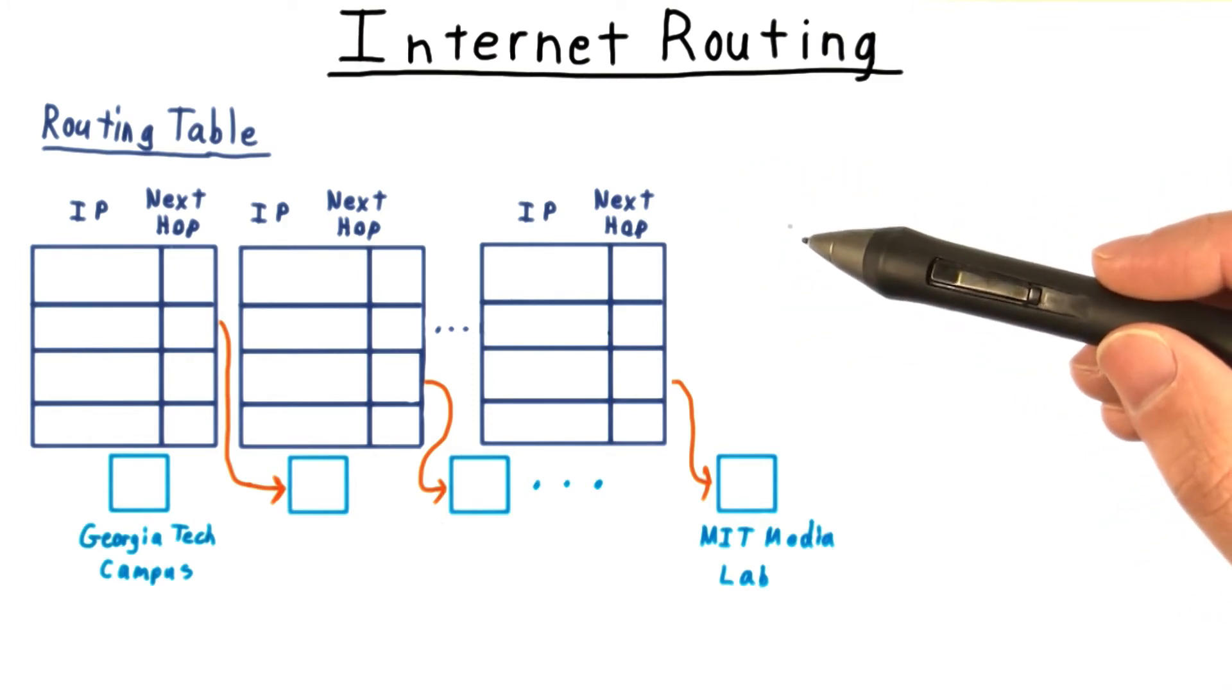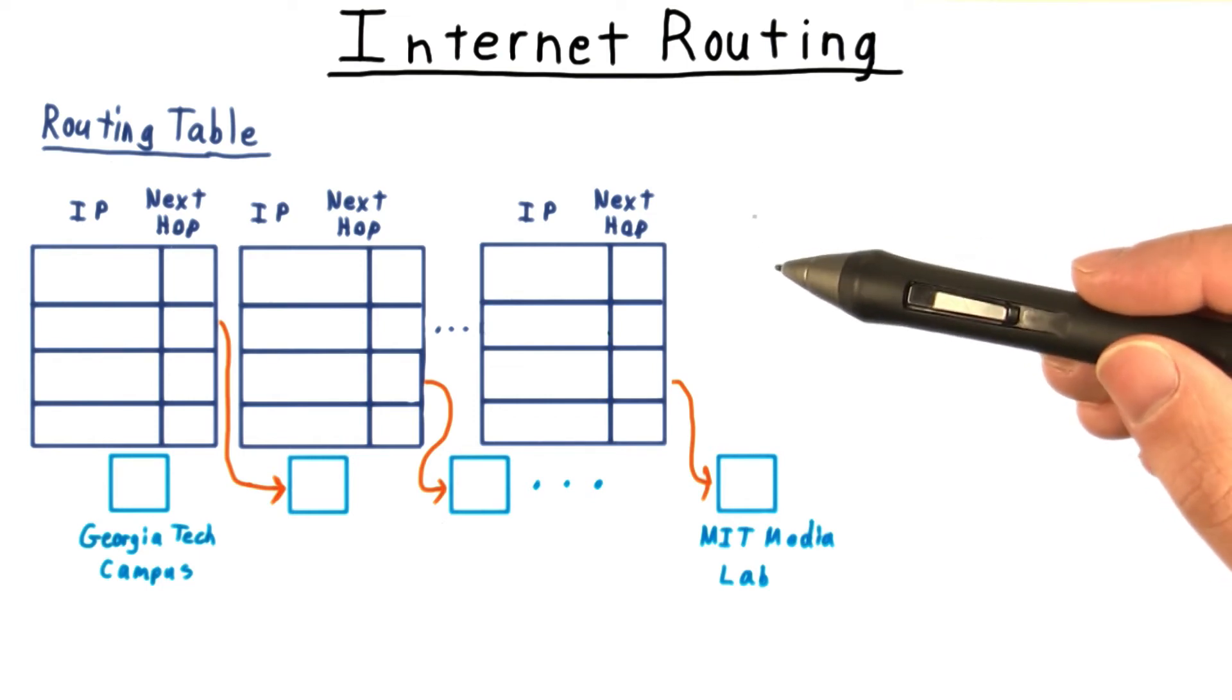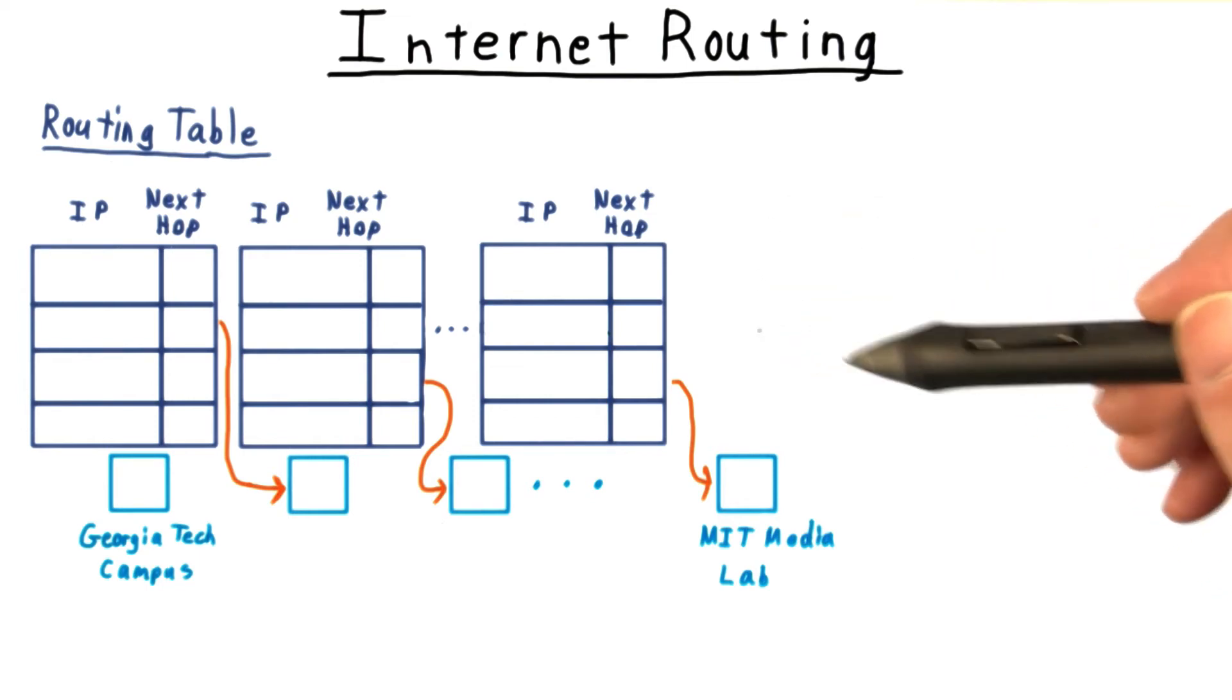Fortunately, this isn't necessary. Because IPs are largely allocated based on region, similar IPs will often take similar routes.